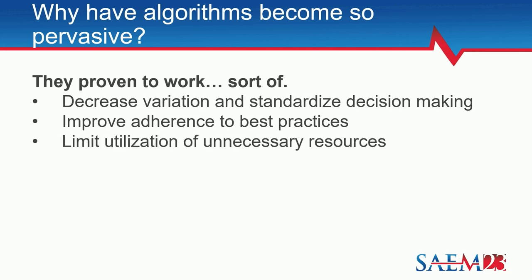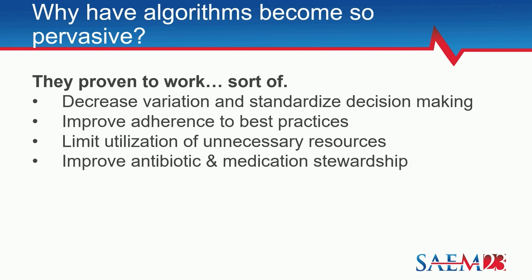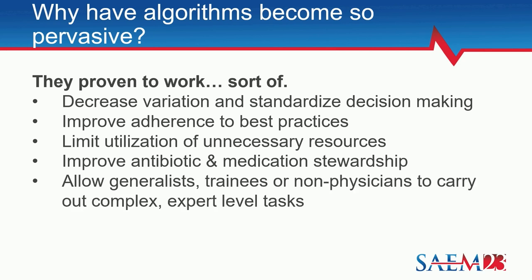They have been shown to limit over-utilization of resources and to improve antibiotic as well as other medication stewardship processes inside hospitals. One of the big things they do is allow generalists, trainees, and other non-physicians — people who may not have classically made clinical decisions — to carry out complex expert tasks. A good example is triage order sets where a nurse is actually creating orders doing clinical decisions that typically would have been done by a physician, but now algorithmically can be done.